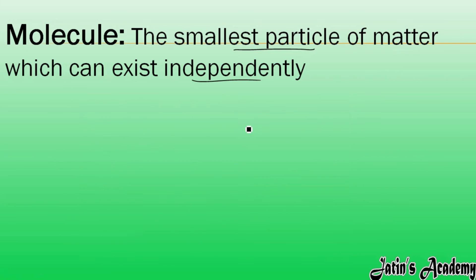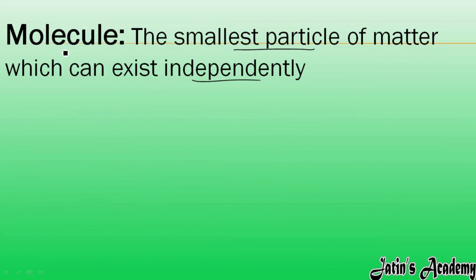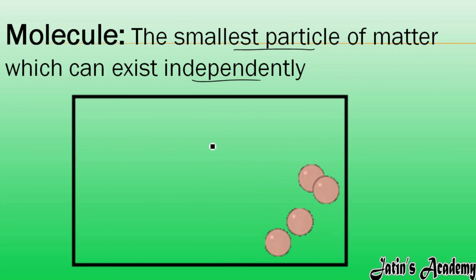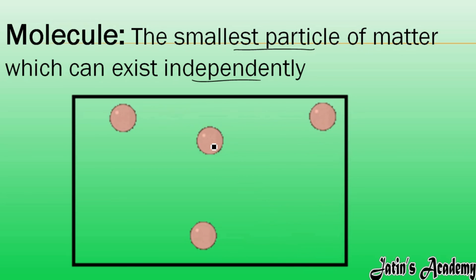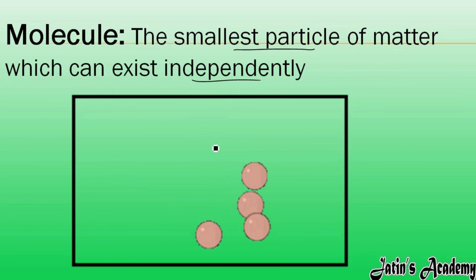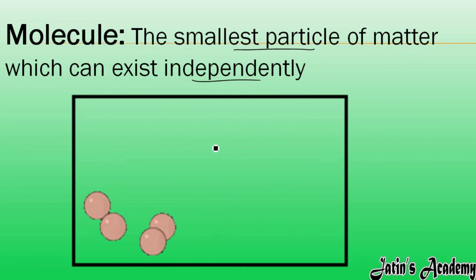So the main difference is: the smallest particle which may or may not exist independently is the atom, and the smallest particle of matter which can exist independently is the molecule. These are the main smallest particles by which matter is made up of — matter is made up of atoms as well as molecules.